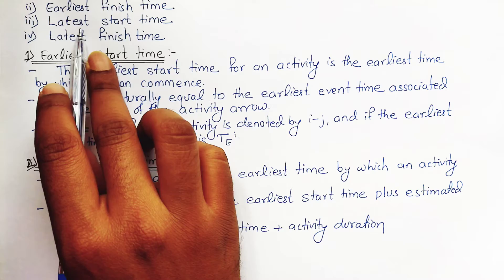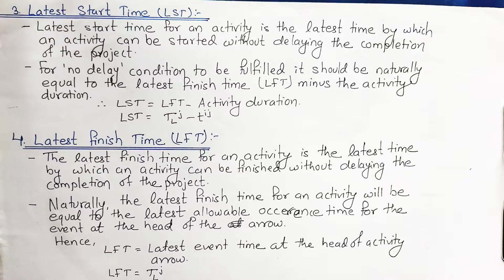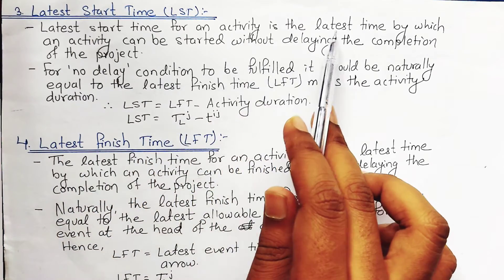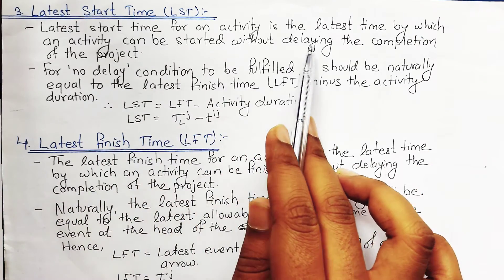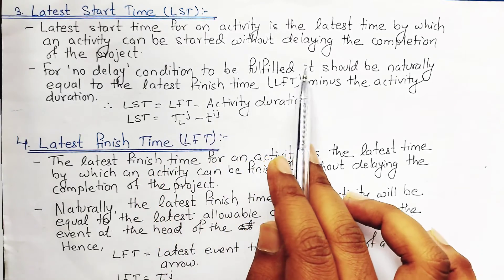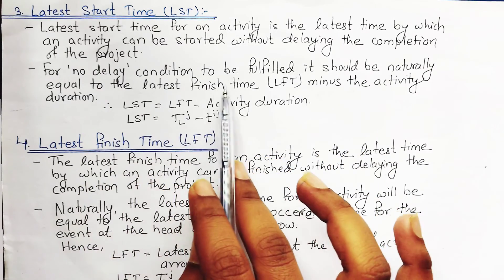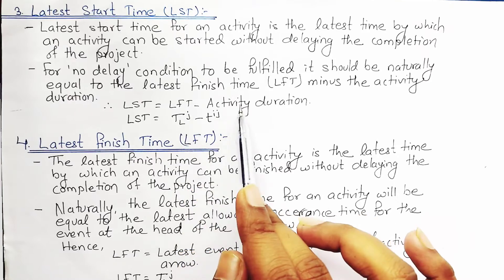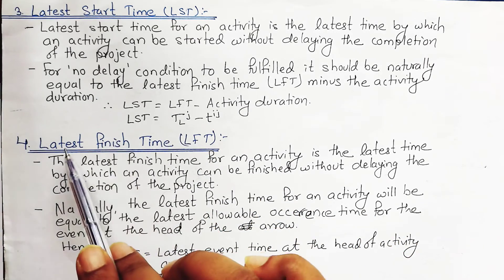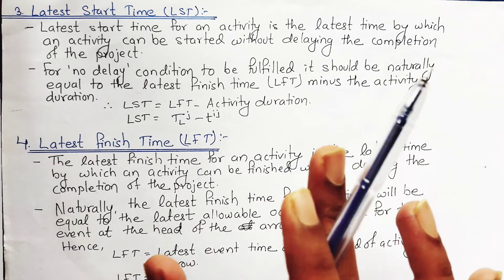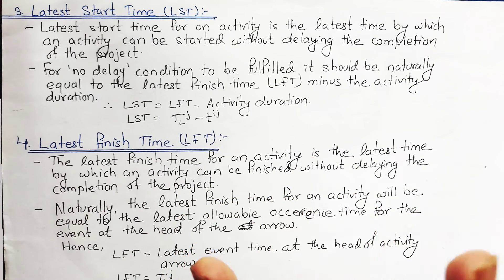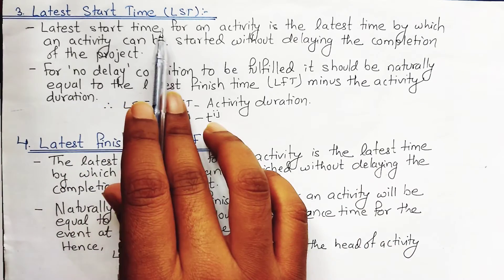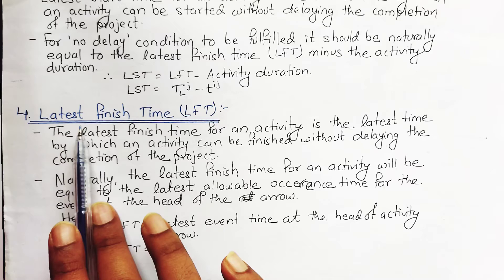The Latest Start Time (LST) is the latest time by which an activity can be started without delaying the completion of the project. It should be equal to the Latest Finish Time minus the activity duration: LST = LFT − t(IJ), denoted as T_L(J) − duration. This ensures that even if we start some activity late, the project completion is not delayed.